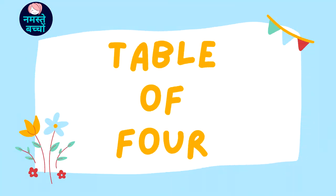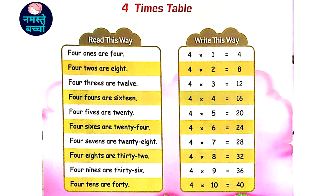Table of 4. 4 1's are 4, 4 2's are 8, 4 3's are 12, 4 4's are 16.